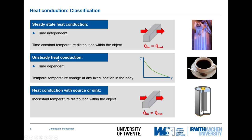The second part is unsteady heat conduction, where the problem becomes time dependent. A very good example is a cup of coffee that cools down over time — there is a difference in the ingoing and outgoing heat flux, and the temperature of the body changes. The last part covers heat conduction with sources or sinks, where Q-in is not equal to Q-out because heat is being generated or dissipated inside the body. A good example is a battery that has heat losses due to ohmic resistances and becomes warm over time.